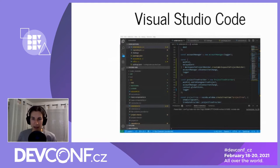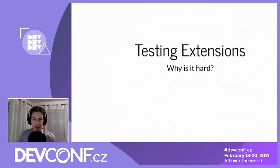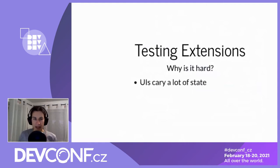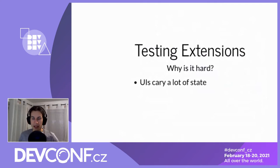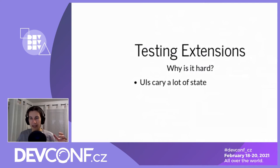Now let's get started with the actual topic: testing extensions. In my impression, testing extensions for VS Code is pretty tough. The main reason is you are testing a UI, and UIs have the disadvantage that they carry a lot of state. If you have something open in VS Code, all the UI elements that are present represent a certain state, and all of that state influences how your extension interacts with it.